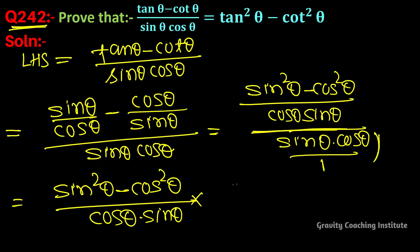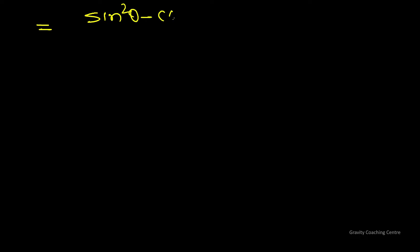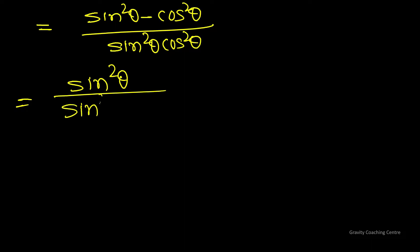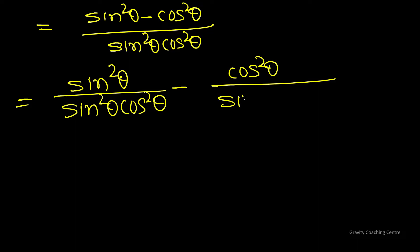Multiplying by the reciprocal 1/(sin θ · cos θ), we get (sin²θ - cos²θ) upon (sin²θ · cos²θ), which can be split as sin²θ/(sin²θ · cos²θ) minus cos²θ/(sin²θ · cos²θ).